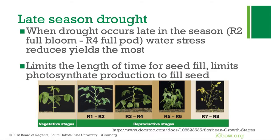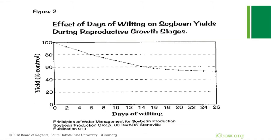Late season drought is the one we have to worry about most. When drought occurs from R2 — full bloom — through R5 and R6 during pod fill, that's when you can lose yield very, very quickly. Research from Mississippi shows that in just six days of wilting you've already lost 20% of your yield, because you're losing flowers, pods, and seeds simultaneously.